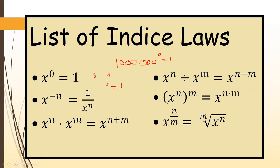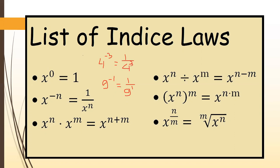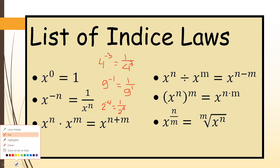The next rule is: x to the power negative n equals 1 over x to the power n. For example, 9 to the power negative 1 becomes 1 over 9 to the power 1. Or 4 to the power minus 3 becomes 1 over 4 to the power 3. Or 2 to the power negative 4 becomes 1 over 2 to the power 4.